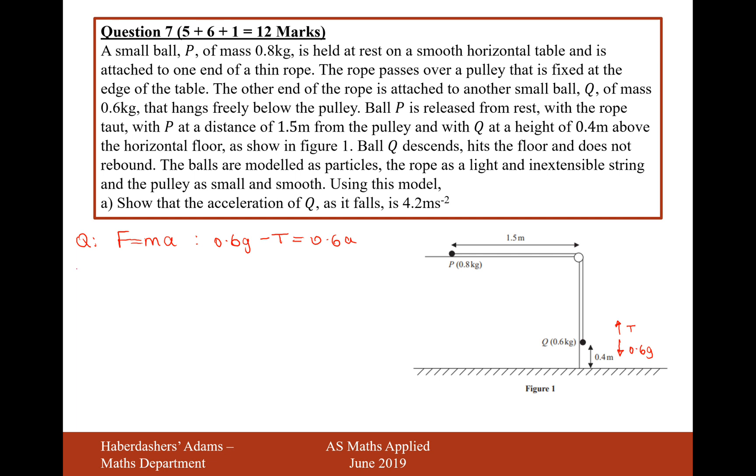Now, we probably want to do the exact same thing for P. So another F equals ma equation. We're going to have the tension in the rope pulling it that way. The weight of the force is not going to be included here because we're resolving in the horizontal direction. So for this question, it's just going to be T equals 0.8a.